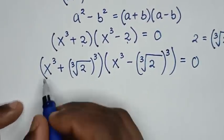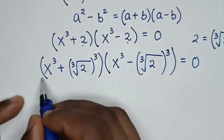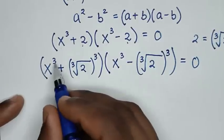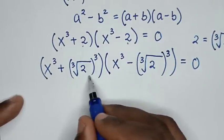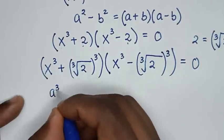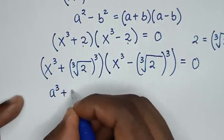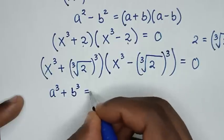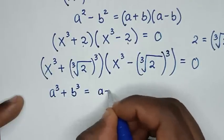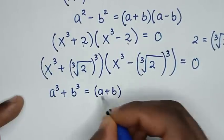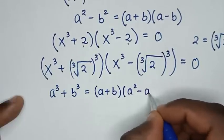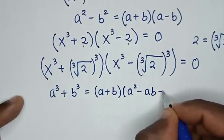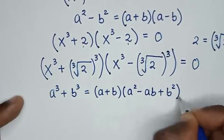Then, in the next step, from here it is now in the form of a perfect cube, with power of 3 and power of 3. So into this part, we will apply the algebraic rule which is a³ + b³ = (a + b)(a² − ab + b²).